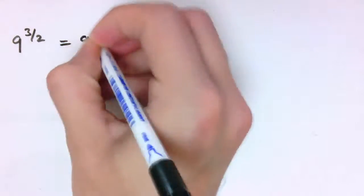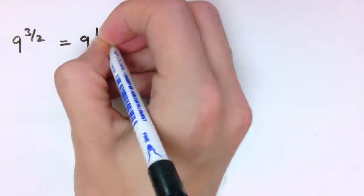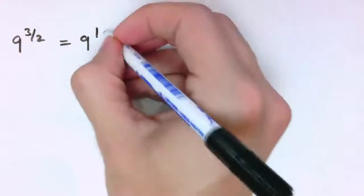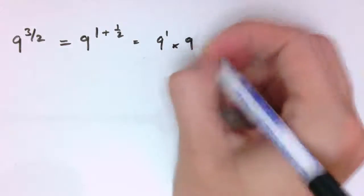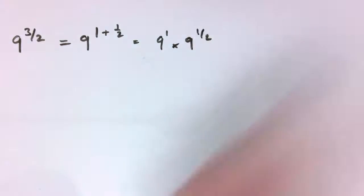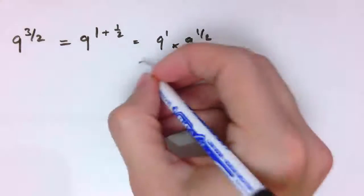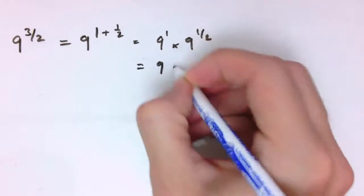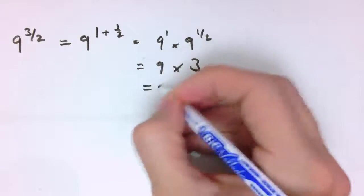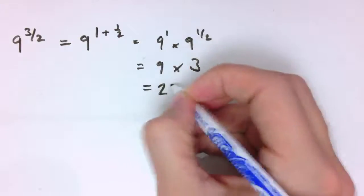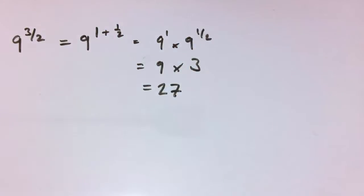So if I wanted 9 to the 3 over 2, I could say that's 9 to the 1 and a half, so 9 to the 1 plus 1 half, and that's 9 to the 1 times 9 to the 1 half by the addition rule for indices, and that's 9 times the square root of 9, which is 9 times 3, which is 27.